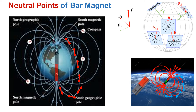The earth's magnetic field has two components: BH, the horizontal component pointing towards the geographic north, and BV, the vertical component pointing toward the center of the earth. So the magnetic field of the magnet — which surrounds the magnet — cancels out BH at the neutral points.